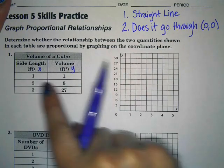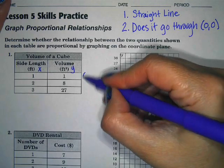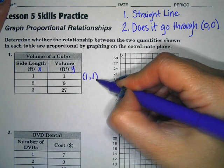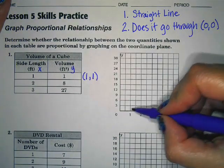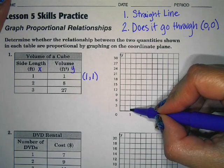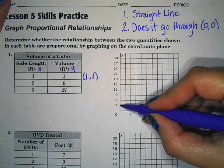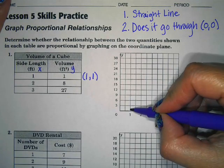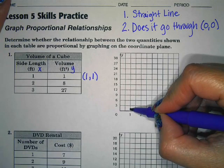So we're going to have one one. So this is the same thing as point one one. So I'm going to go over to one on the x and then up one. Notice that my graph is by threes though. So one would be about a third of the way up right about there.